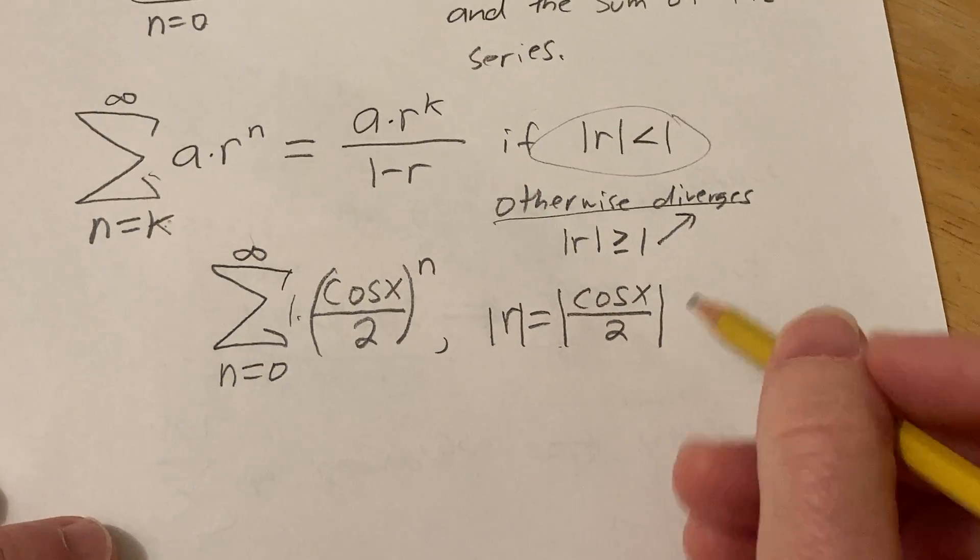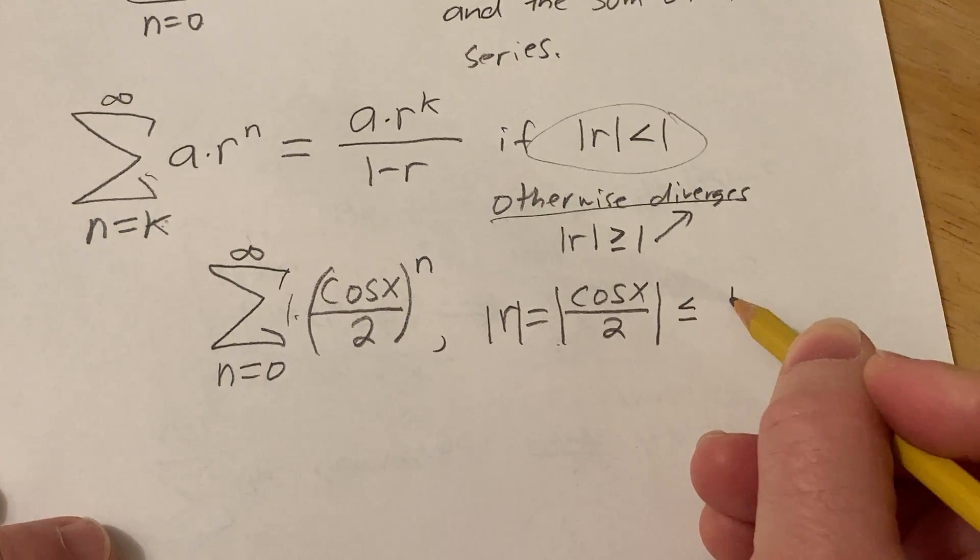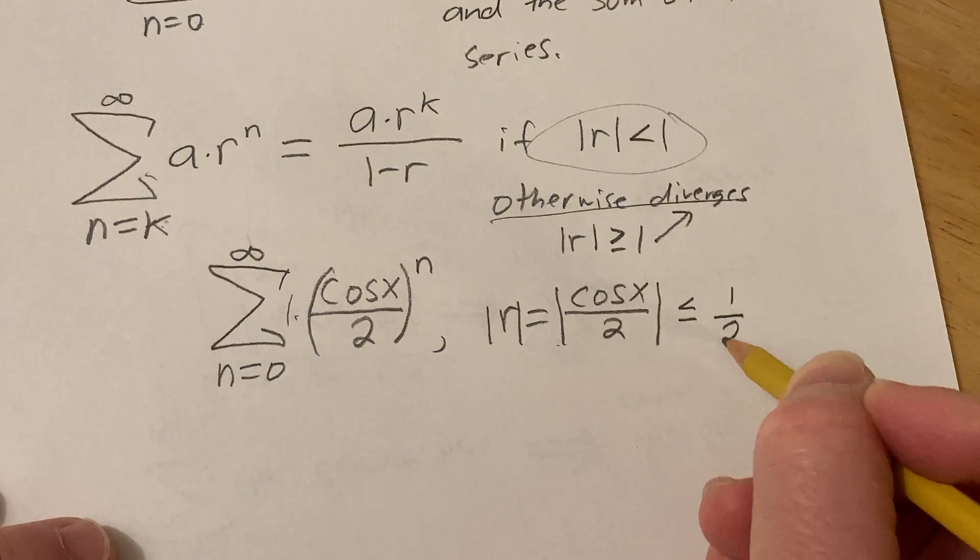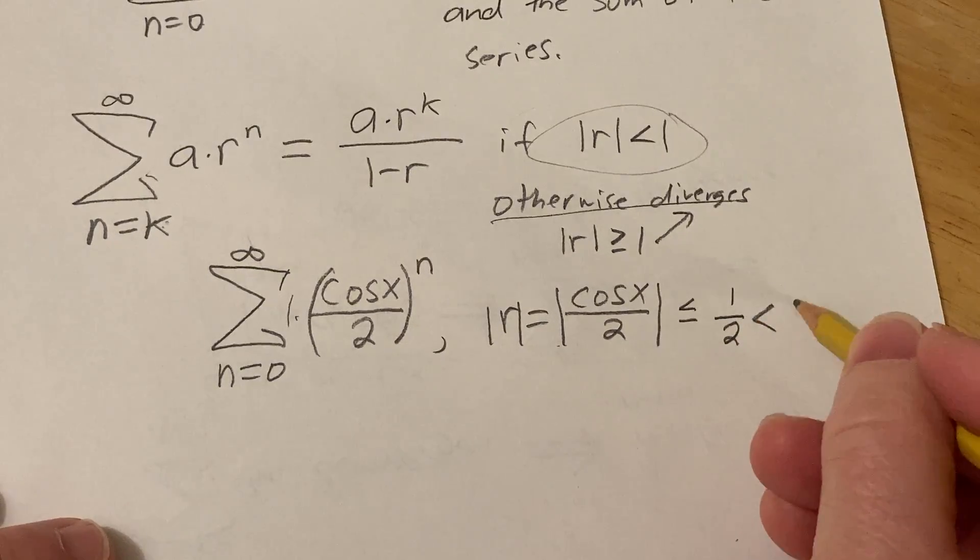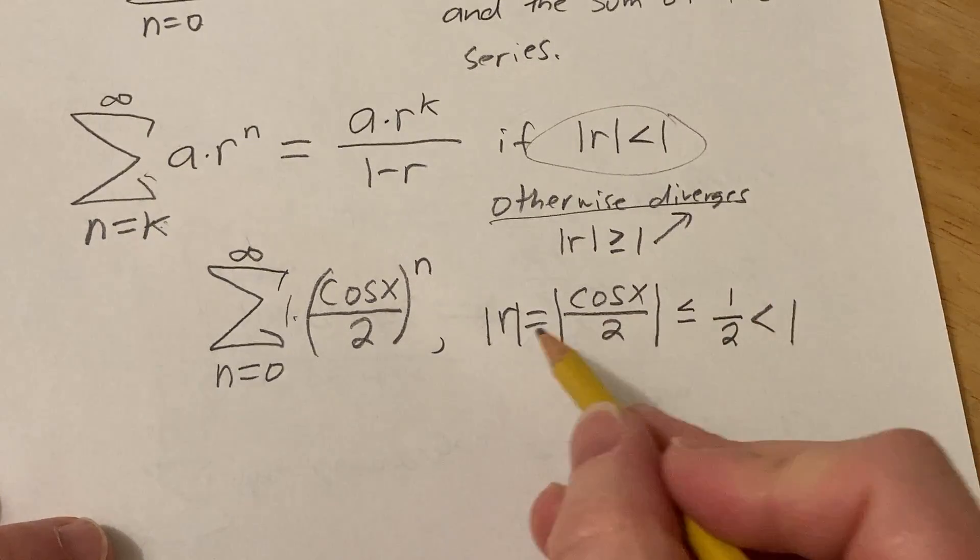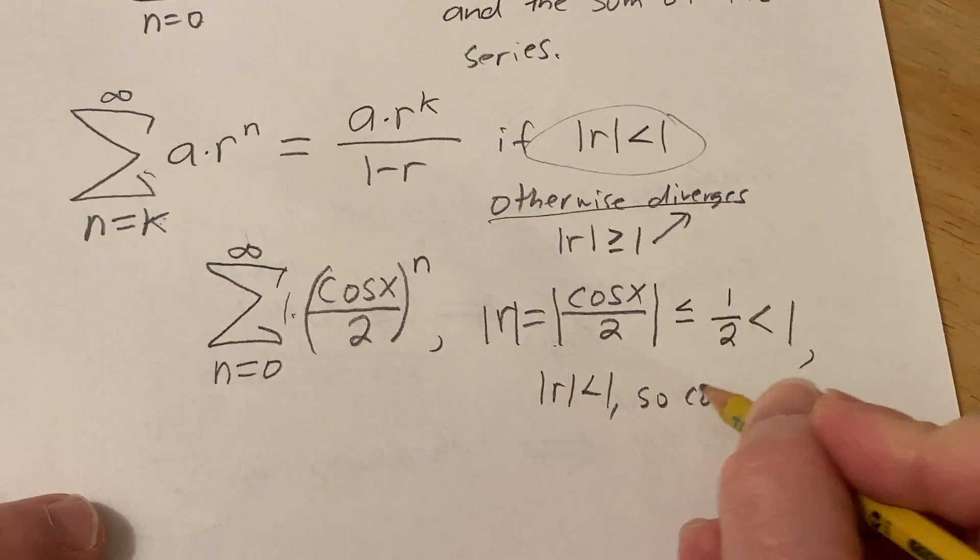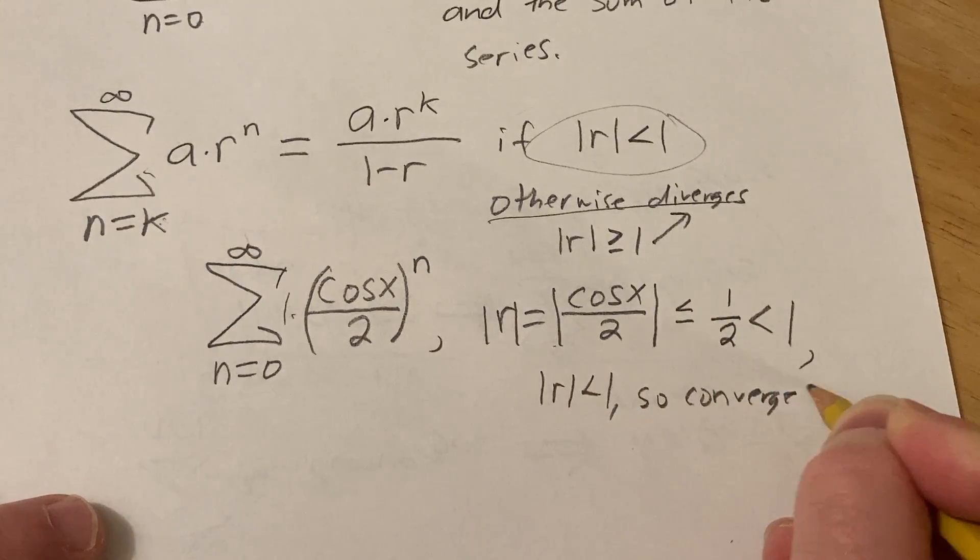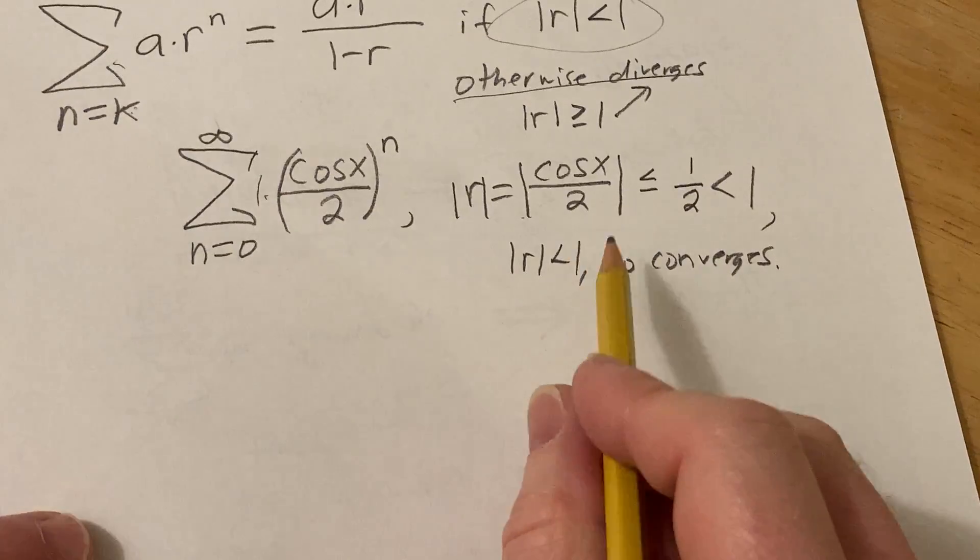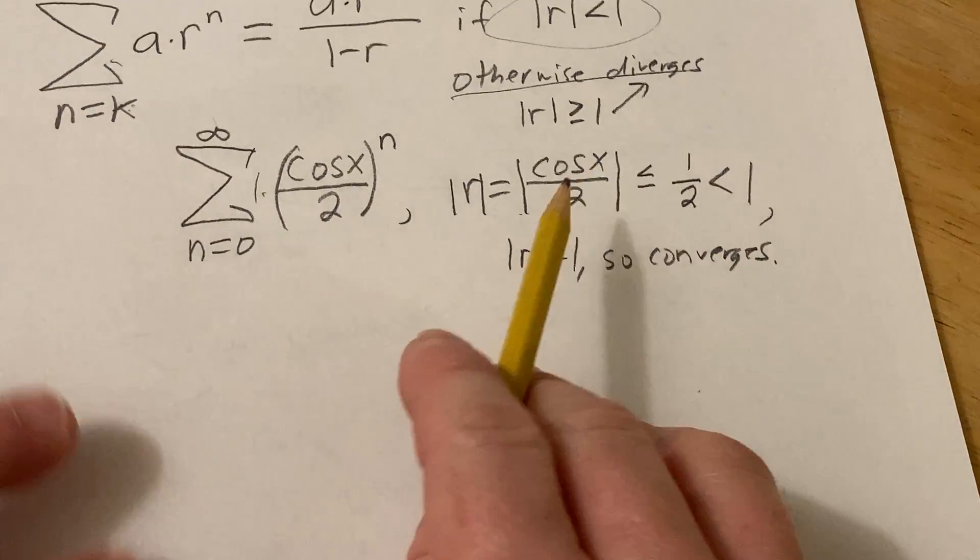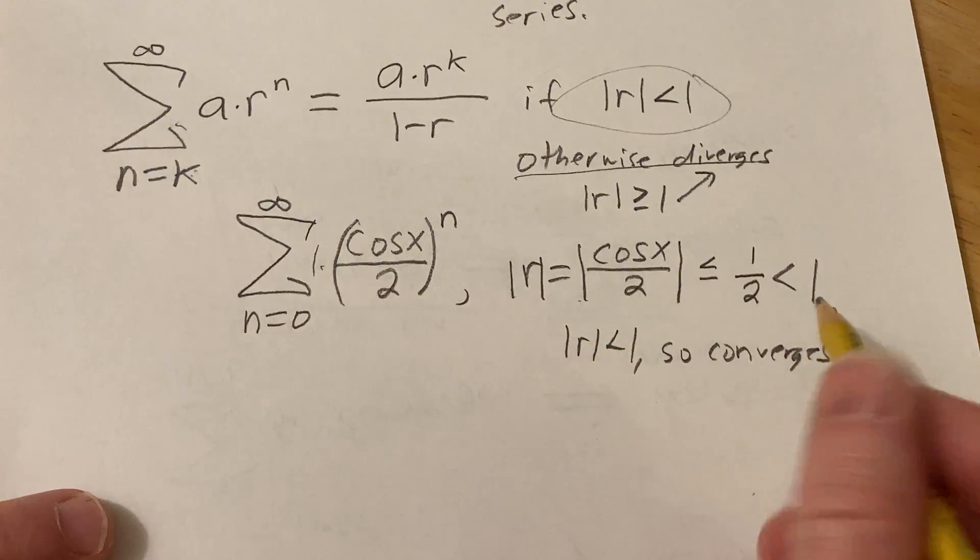So the absolute value of cosine is less than or equal to 1, and then here we have the 2, and that's certainly less than 1, right, 1 half is less than 1. So the absolute value of r is less than 1, so our series does converge. So it converges. Notice that I said nothing about x. So basically this is going to converge for all x.